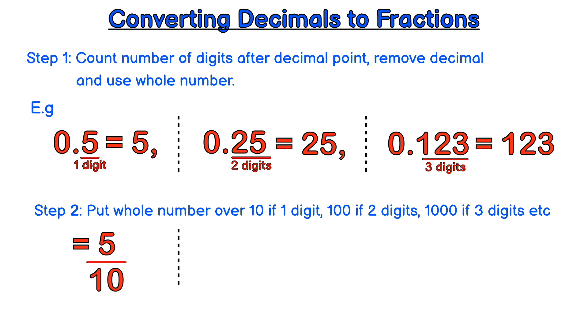With 0.25, we have two digits after the decimal. So it becomes 25 over 100.